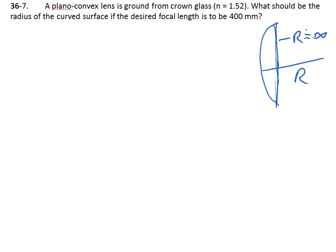So this is a case of simple substitution into the lens makers equation. So we need to use 1 over f is equal to n minus 1, times 1 over r1 minus 1 over r2.